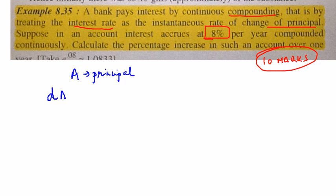So the rate at which the principal is changing over a time t, the rate at which, that's what I'm writing by dA/dt, the rate at which the principal is changing over a time t is proportional to A.